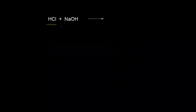Let's say we have some hydrochloric acid and a solution of sodium hydroxide. We know that hydrochloric acid is a strong acid, so we can think about it as consisting of H+ and Cl−. Sodium hydroxide is a strong base, so in solution we're going to have sodium ions and hydroxide anions.